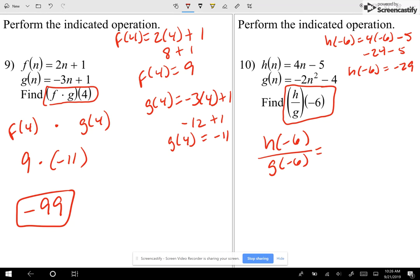Now let me see what g of negative 6 is. I have negative 2 times negative 6 squared minus 4. So I have negative 2 times 36, because I did the square first, minus 4. So that gives me negative 72 minus 4, which we're just going to call negative 76.